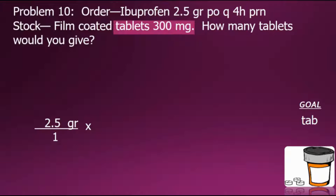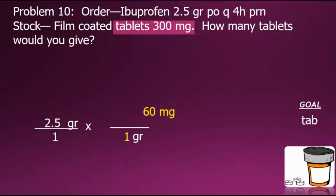To do so we will create a conversion factor fraction such that the current unit of grains is cancelled out. Since grain is in the numerator, we will place grain in our conversion fraction in the denominator. Looking up a relationship between grain and milligram, we take equivalent values and express them in fractional form — one value in the numerator and an equivalent value in the denominator — giving a special fraction with a value of 1. Multiplying by 1 doesn't change the value but allows us to convert from one unit to another. Grains divided by grains equals 1 and cancels out, leaving our doctor's order in milligrams.